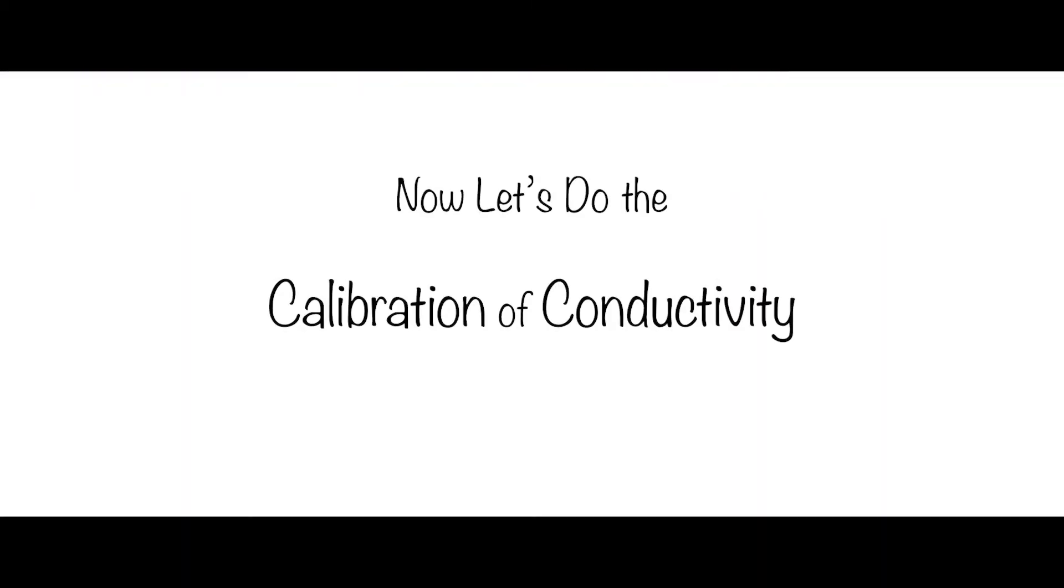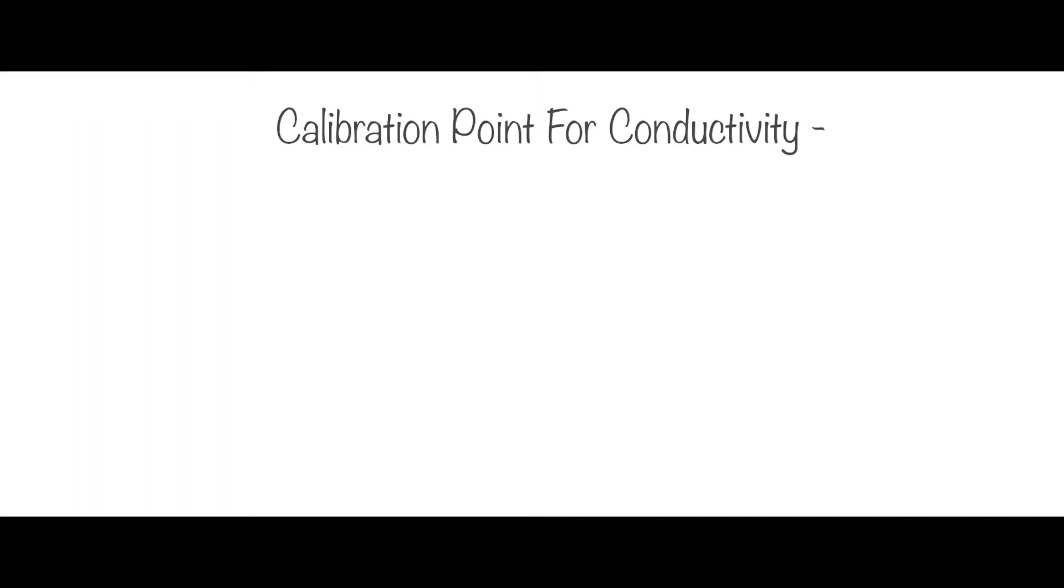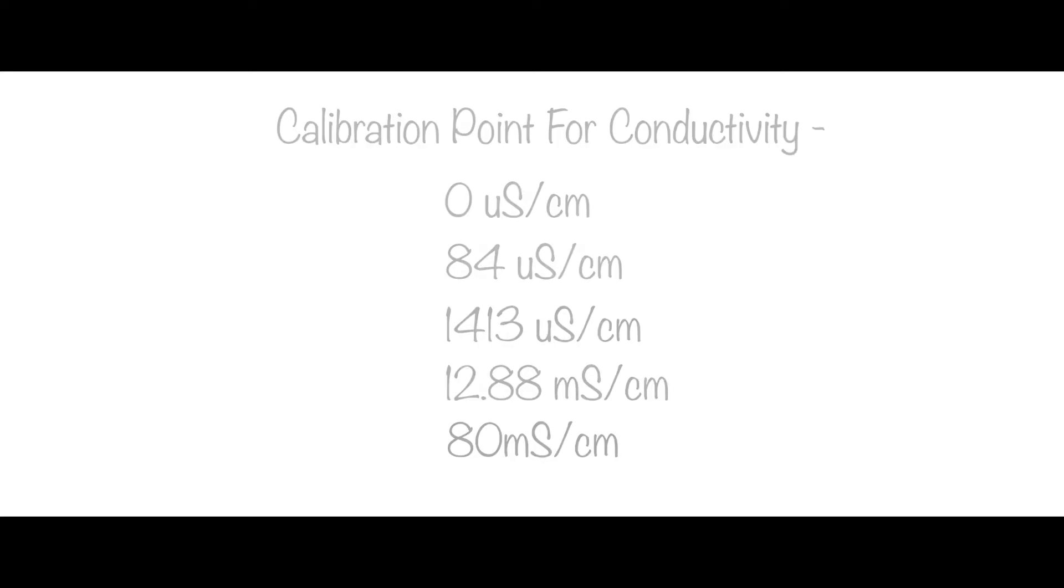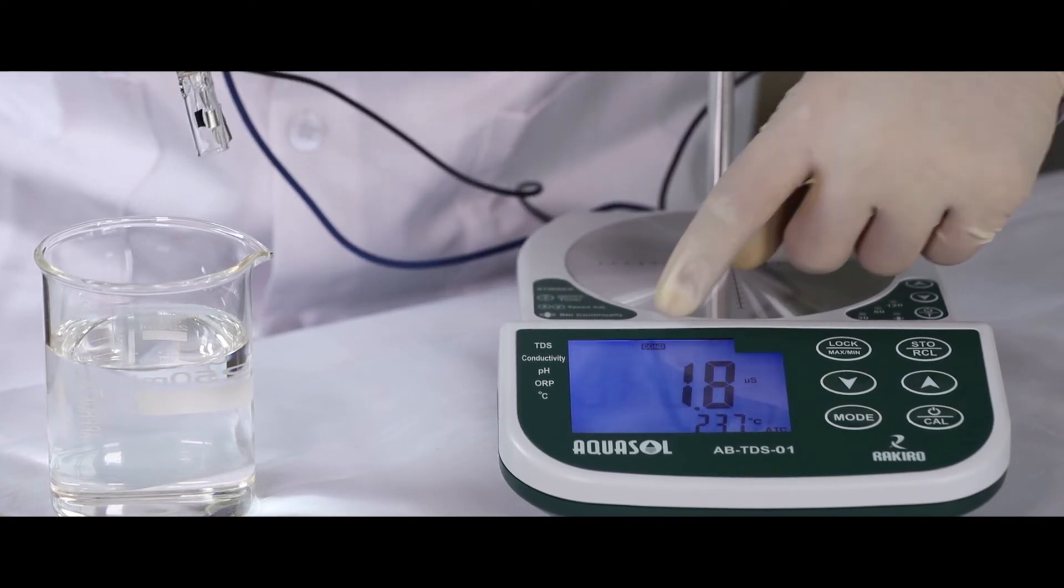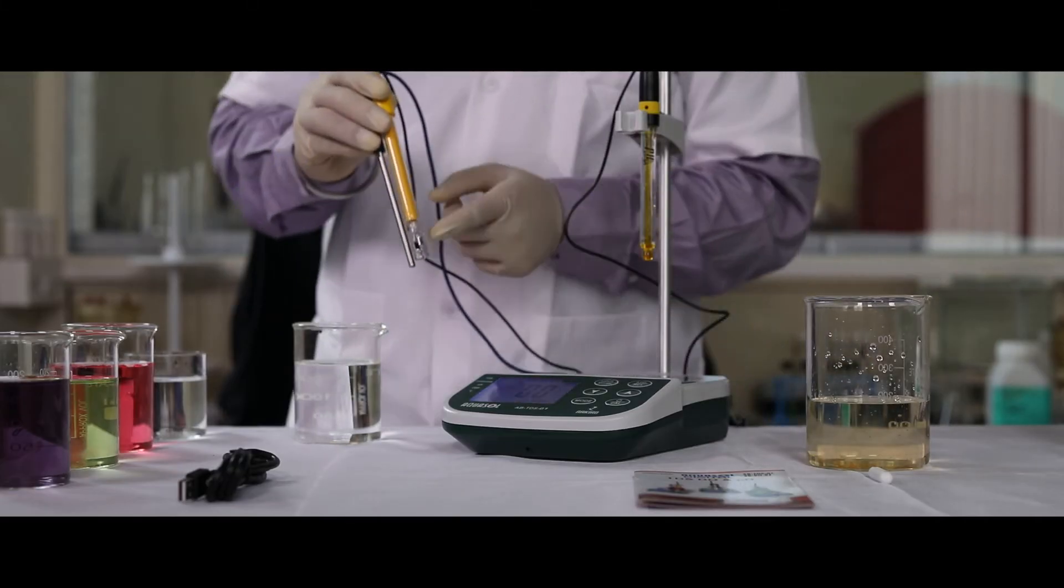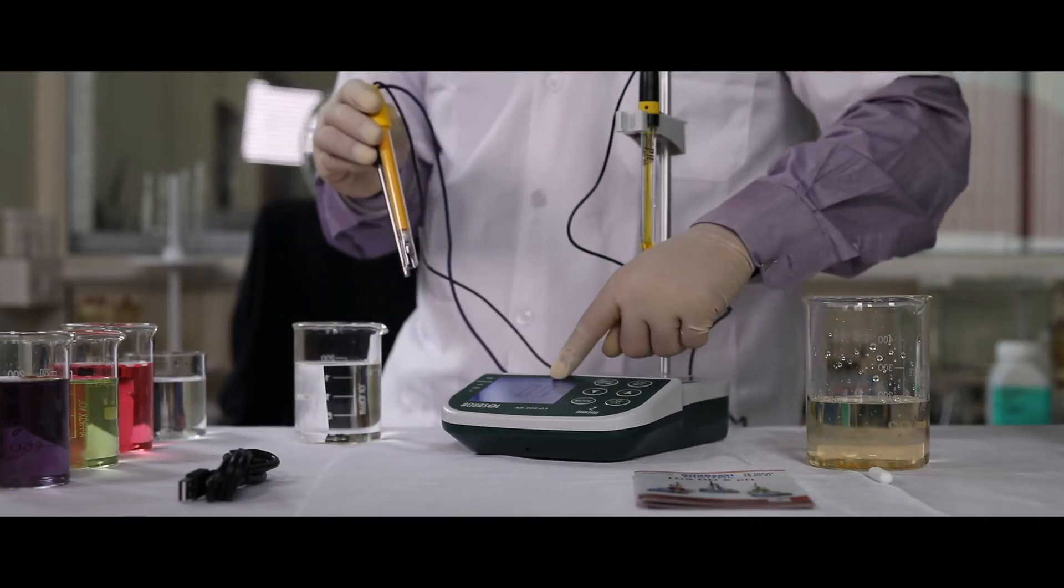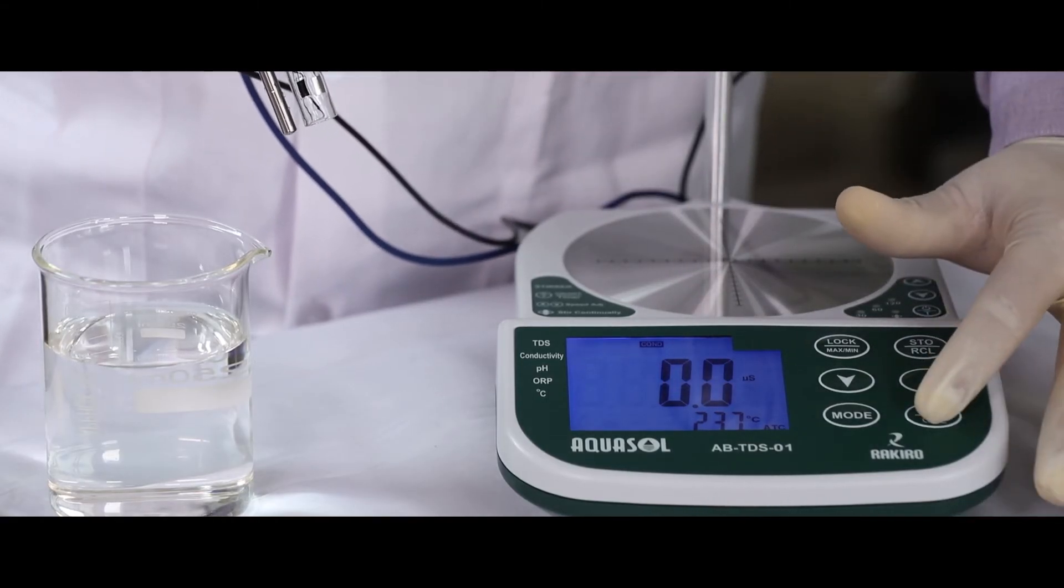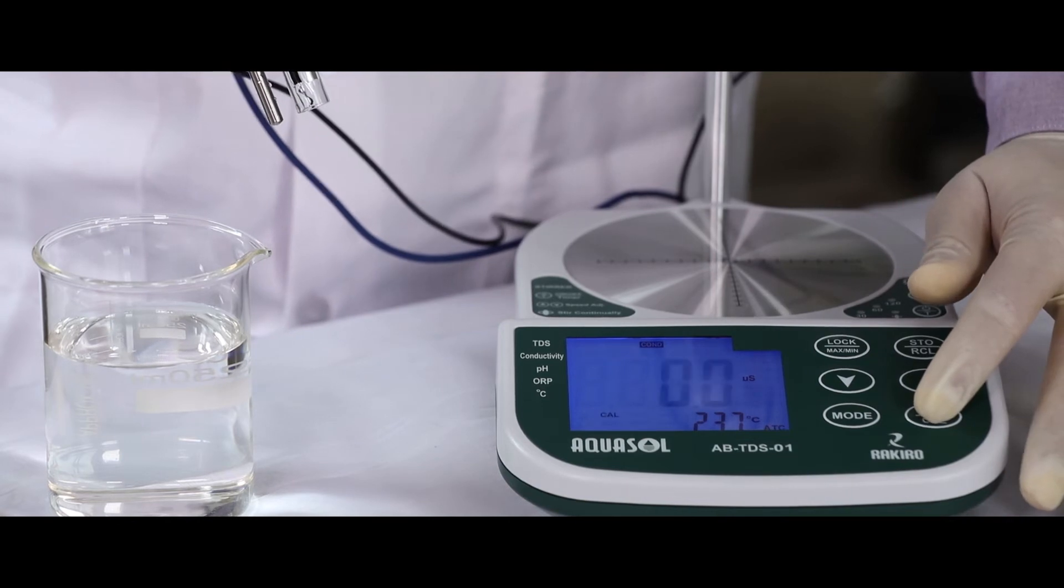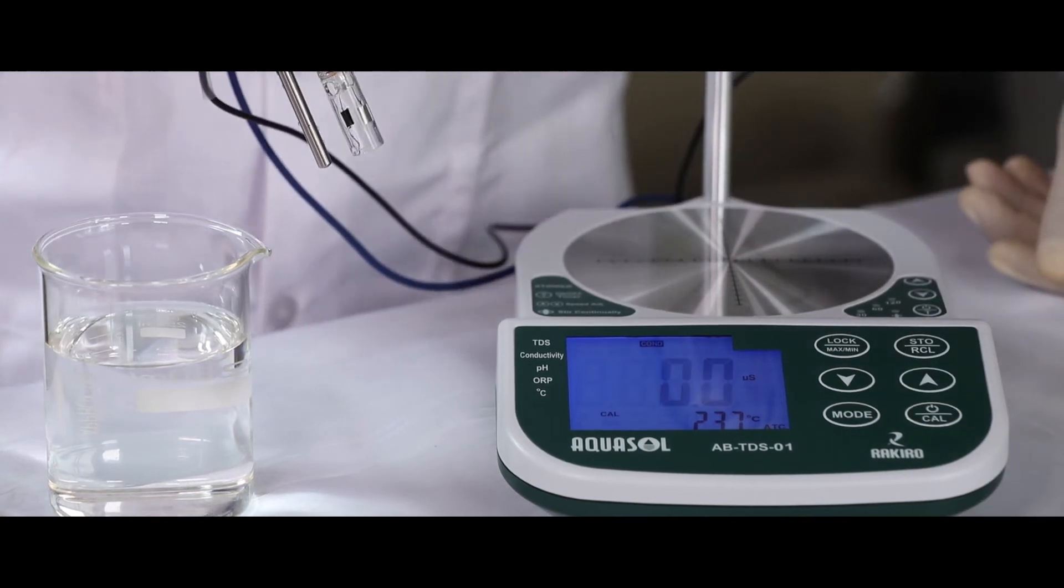The calibration points for conductivity are 0, 84, 1413, 12.88, and 80. Press the mode key to enter the conductivity mode. When the conductivity electrode is in air, the reading on the meter should show 0.00. If the reading is not 0, press Cal key to calibrate it to 0.00.